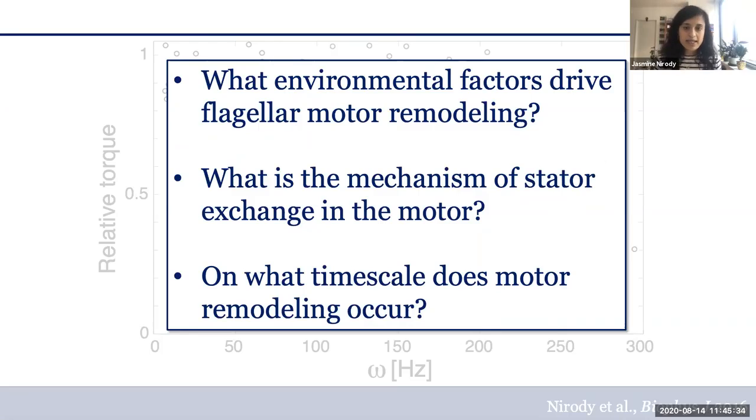Going back to the questions I posed a few slides ago, we can hone in on three more pointed lines of inquiry: First, what are the environmental factors that are driving remodeling in the flagellar motor? What does this mean for the motor itself at the molecular level—what does this remodeling actually entail? And finally, to me the most interesting question: on what timescale does this remodeling happen? Do bacteria adapt within a single generation as they're transitioning between different lifestyles, or do they adapt across generations so that their progeny can have better lives?